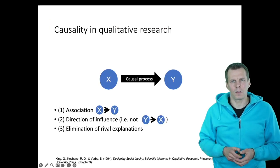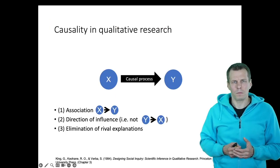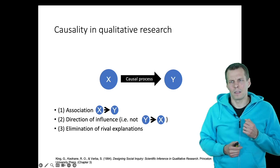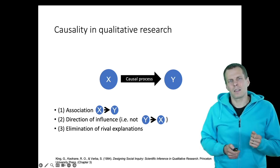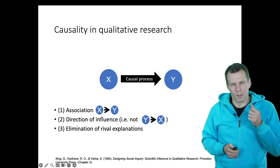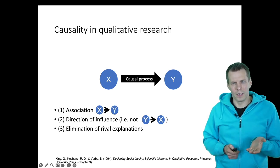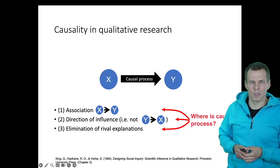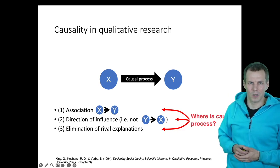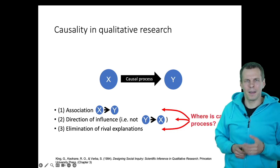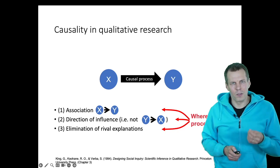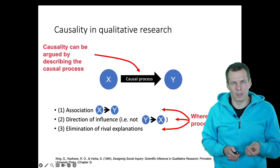So how would a qualitative researcher address this same problem: does naming a woman as a CEO cause profitability differences? A qualitative researcher would criticize the quantitative approach, arguing that the three rules the quantitative researcher follows have no causal process in them — where is the causal mechanism? The qualitative researcher would instead argue causality by describing the causal process.